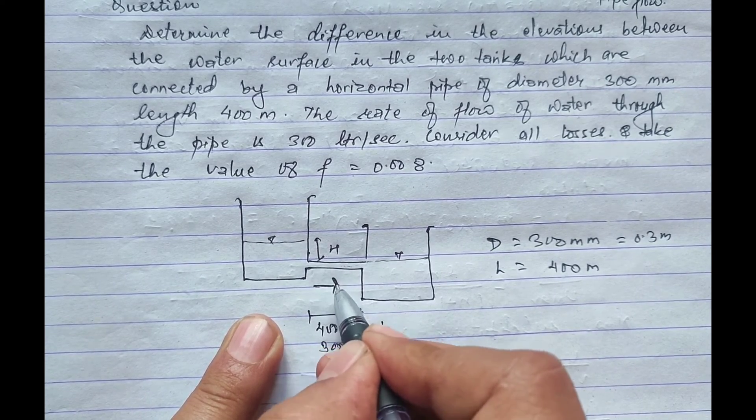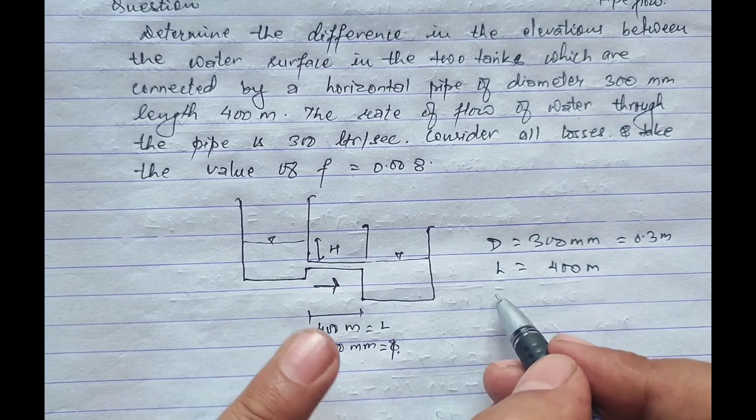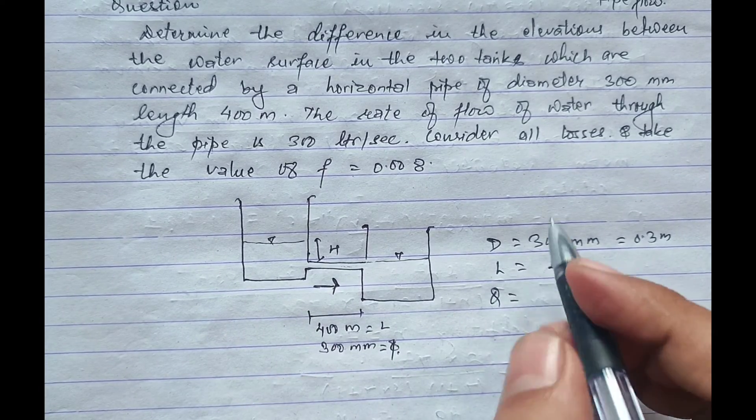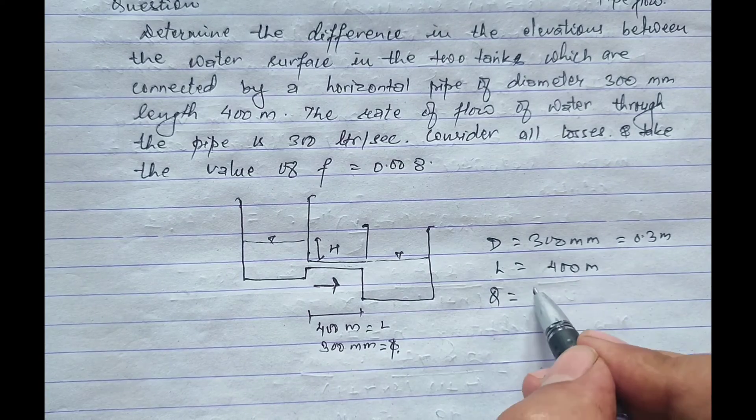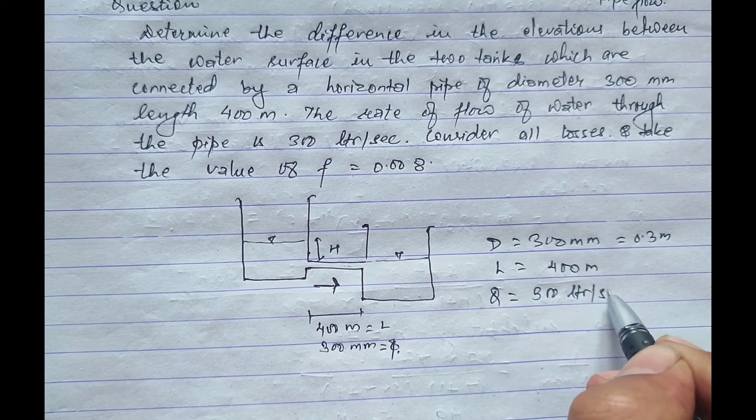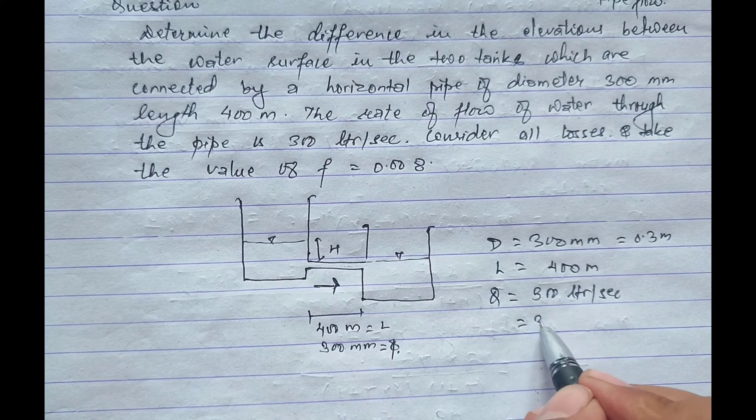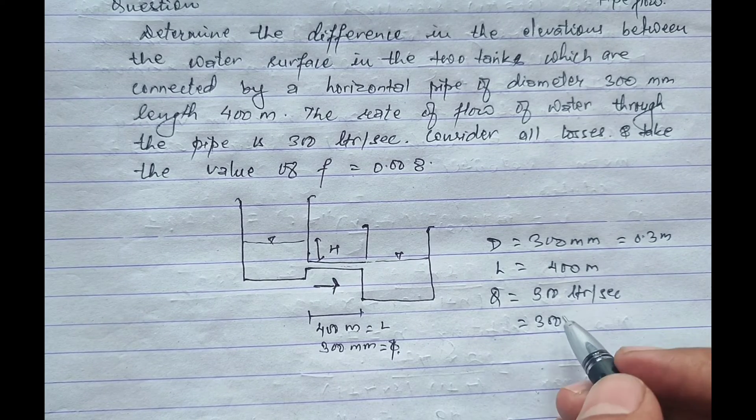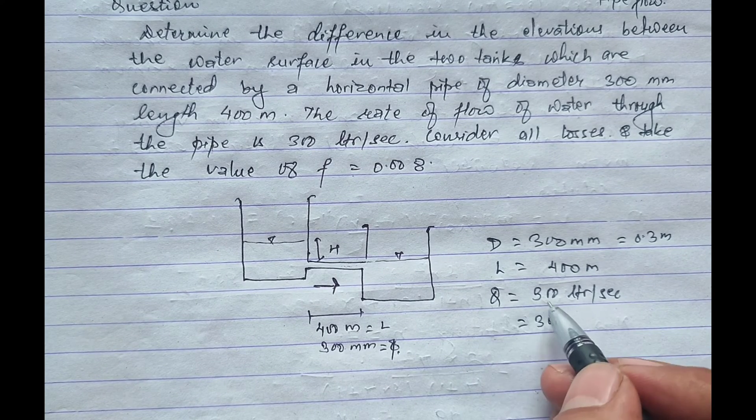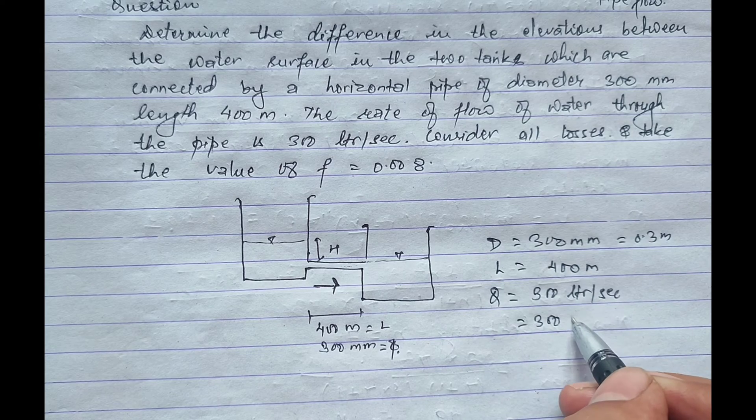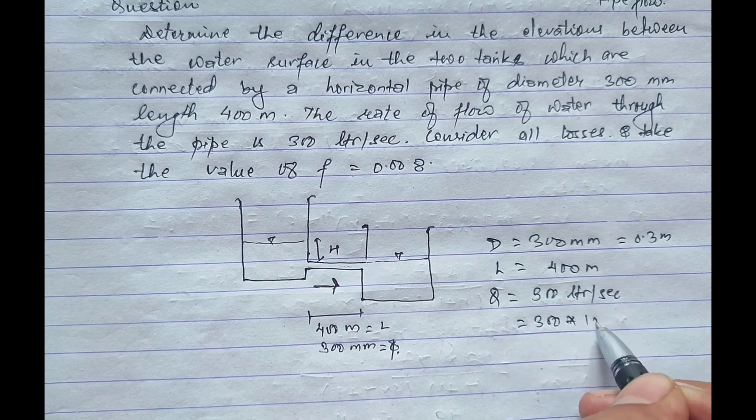Discharge from this pipe, the flow direction is this, discharge Q equals 300 liter per second. We have to convert this liter per second into meter cube per second, which equals 300 into 10 power minus 3 meter cube per second. And coefficient of friction is f equals 0.008.